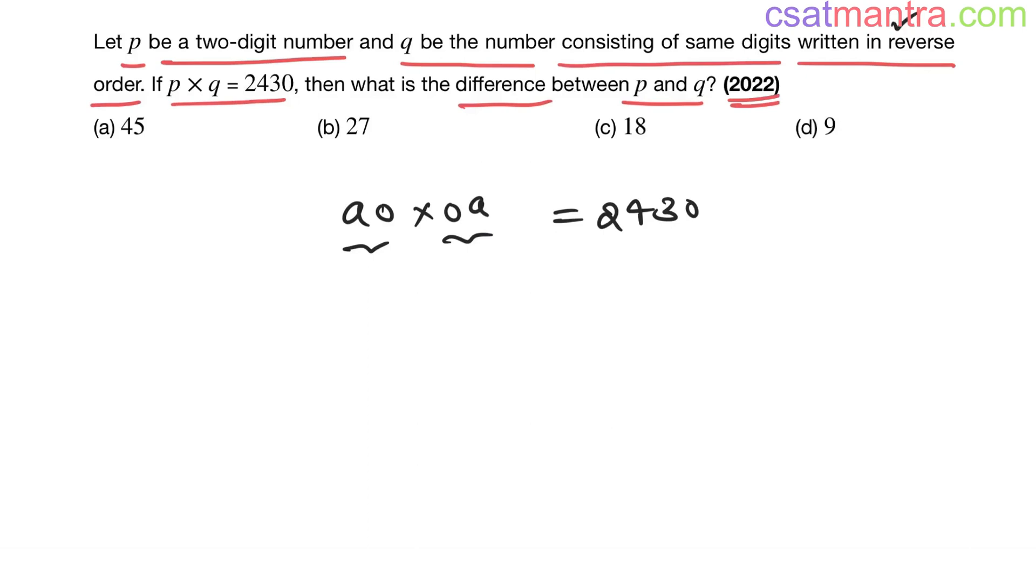Let's see what is the maximum a can be. Nine, right? 90 into 09, this is 810. So our number, p does not end with zero. Our number doesn't have zero digits in them, so this option is eliminated.